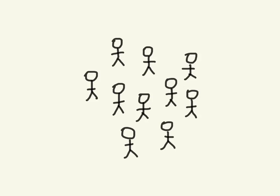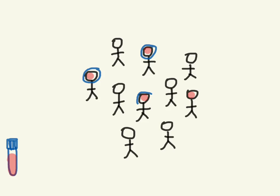Let's say we have this population of people, some of which are afflicted with disease — I've represented that with these red dots on their head. But we don't know which of these people have the disease and which ones don't. So we create a blood test that we can perform on all these people, and we get results that are positive on certain people — I'm going to depict the positive ones with a blue circle.